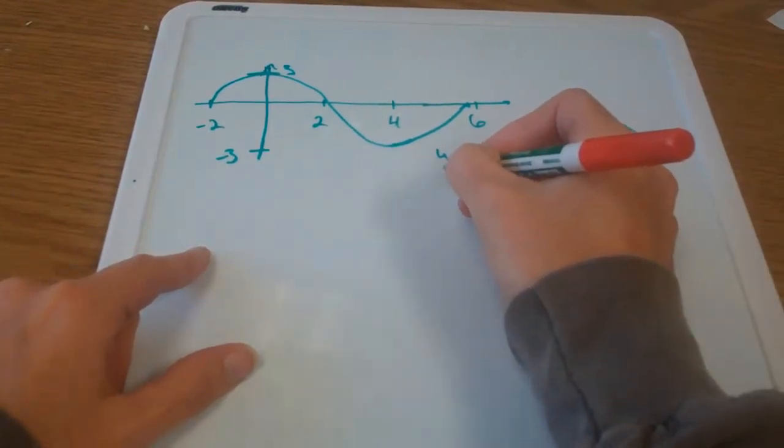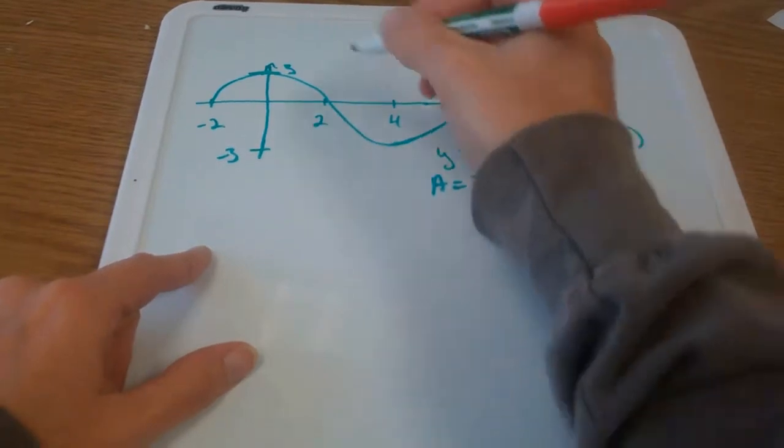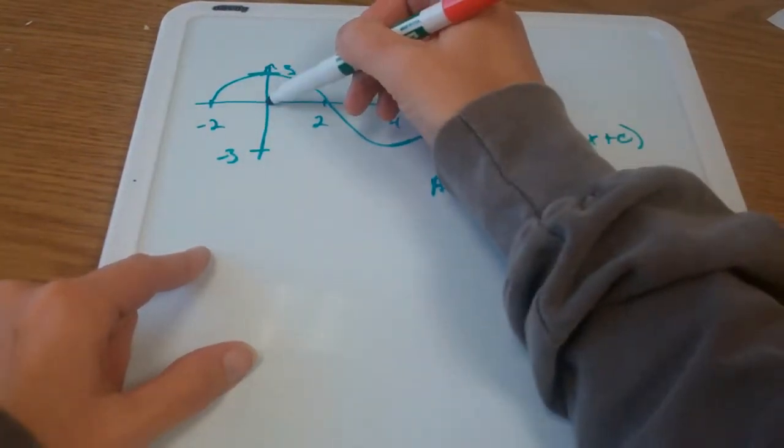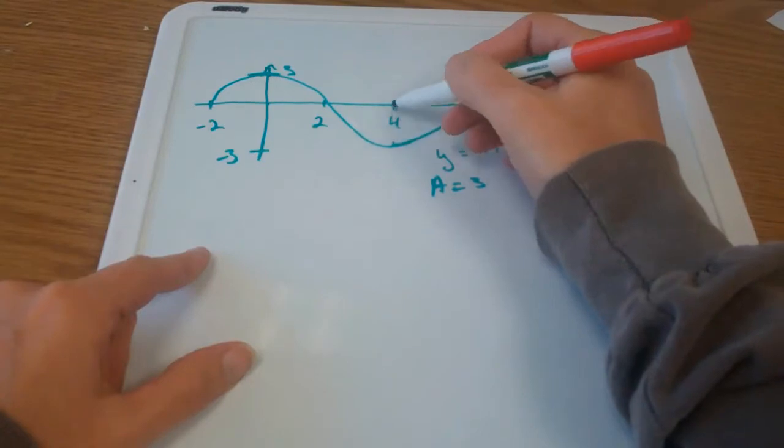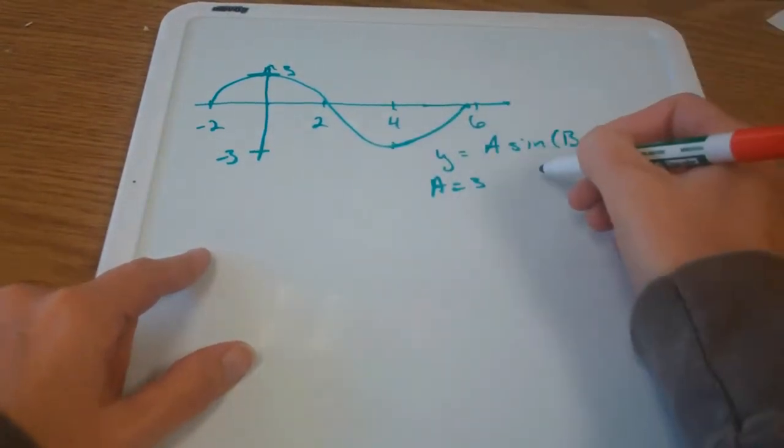I can see from the picture that the amplitude is 3. That's how far up it goes above the x-axis and how far down it goes below the x-axis.